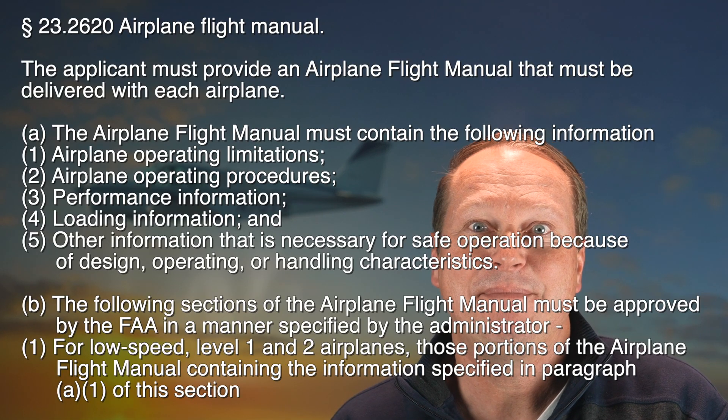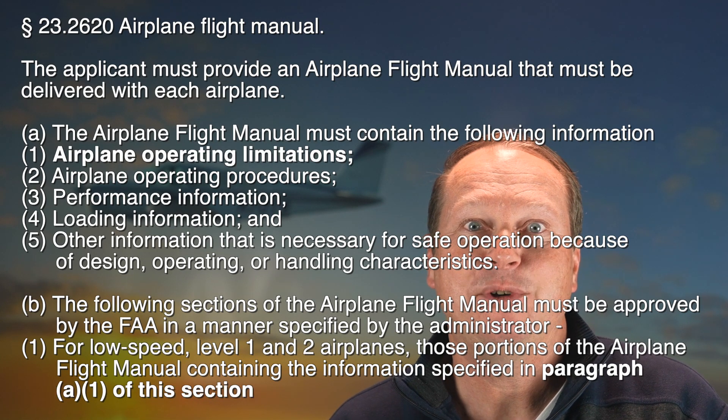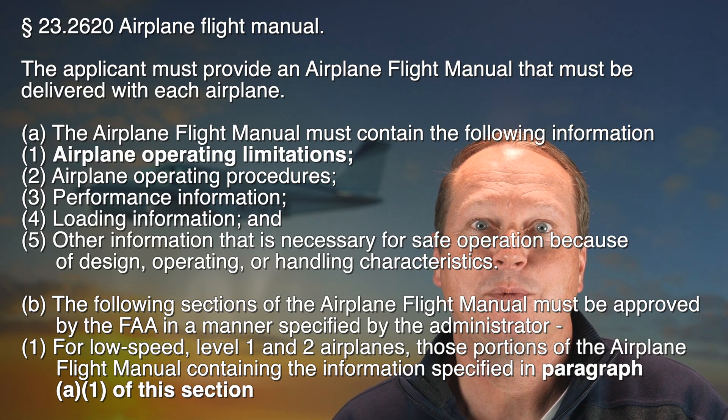And Part 23 — that's the one which defines the Aircraft Certification Rules — says that an AFM must be delivered with each airplane, and it highlights the airplane operating limitations as the one section that must be approved by the FAA. This means the aircraft designer can write the whole AFM somewhat freely, but must get FAA approval for the Limitations section. So yes, limitations are special.